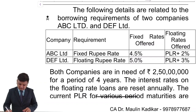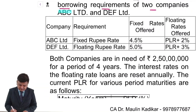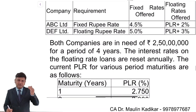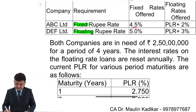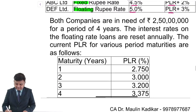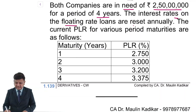Let us see our next question. The following details are related to borrowing requirements of two companies called ABC Limited and DEF Limited. The names of both companies are provided. The requirement of funds is given: ABC wants fixed rate funds and DEF requires floating rate funds. Fixed rate and floating rate interest rates have been given. Both companies need 250 lakhs for a period of 4 years. The interest rates on floating rate loans are reset annually.